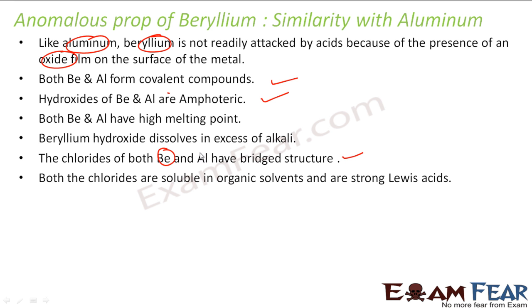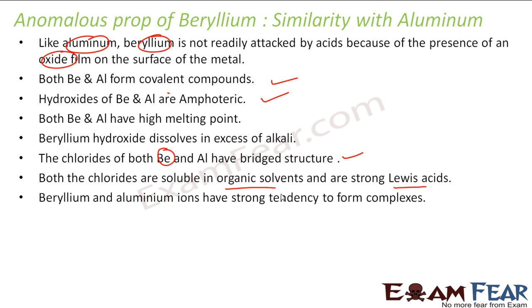Beryllium chloride also has a bridge structure, similar to aluminium chloride. Both chlorides are soluble in organic solvents and are strong Lewis acids because they are covalent compounds. Both beryllium and aluminium have a strong tendency to form complexes. The salts of both beryllium and aluminium are extensively hydrolyzed, due to the small size of the ions.